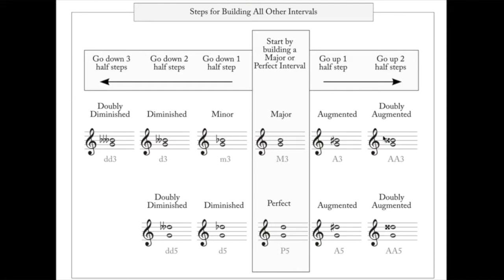Perfect intervals work a little differently. For fourths, fifths, octaves, and unisons, there is no minor version - a perfect fifth lowered a half step does not become a minor fifth, because there's no such thing. If you diminish a perfect interval you go straight to diminished, not through minor. Augmented works the same way though - raise a half step to augment. So for a diminished third you go down two half steps, but for a diminished fourth or fifth you only go down one half step.